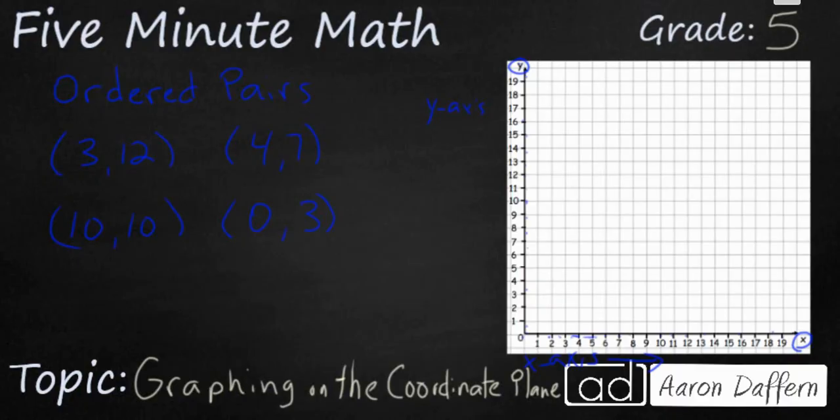One other thing to note is right here in this corner where the X axis and the Y axis meet. That is called the origin. It has a very specific name because its coordinates are 0, 0. Because on the X axis, it is at the 0, and at the Y axis, it is at the 0. So it is where the X axis and the Y axis meet.